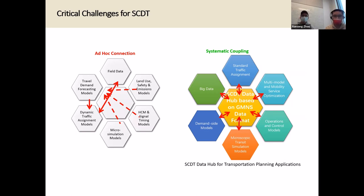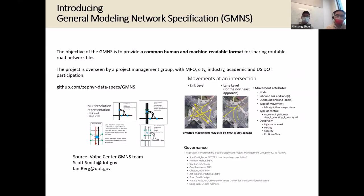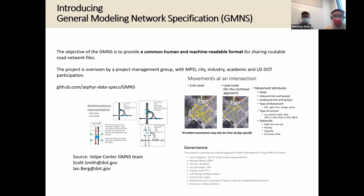In the middle, we have our inventory of all the data and the sensor data, big data, and the demand side models will all be connected to the data hub using certain standards. Starting from last year, Federal Highway USDOT has been introducing the General Modeling Network Specification to our community. You can see a long list of planners who designed the specification, organized by the Zephyr Foundation. The contact person is Scott Smith from USDOT Volpe Center.